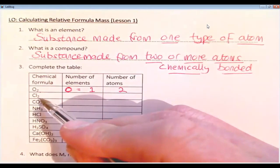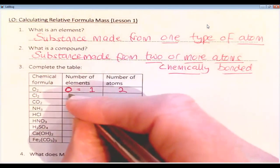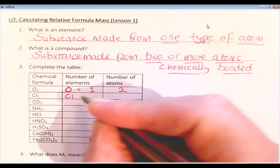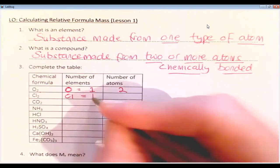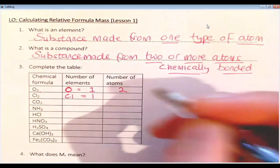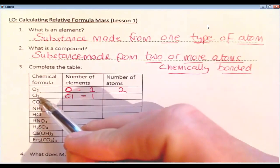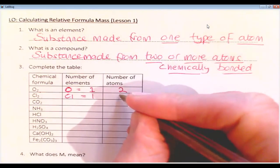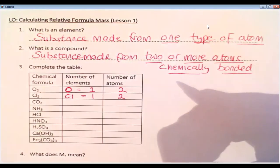Then we have Cl2. Cl2 is chlorine. The element there is Cl. So we've only got one element. But again, because there's a little two after it, the little two means that we actually have two atoms of Cl.